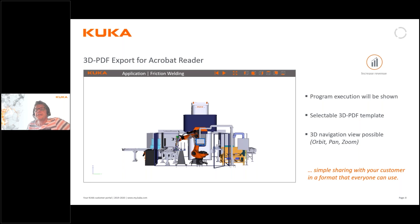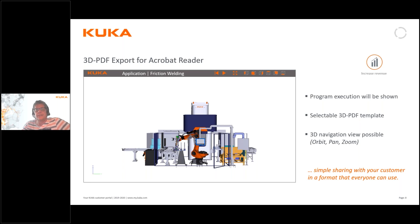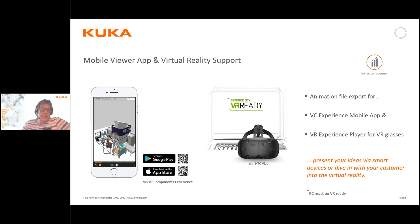I have uploaded under handouts an example of a 3D PDF export which you can download. You'll find it under the GoToWebinar tab handouts — you need Acrobat Reader to view a 3D PDF, but it includes an animation and you can freely pan and zoom within the 3D, so you can send this to your customers and they don't need a 3D tool to view it. And of course KUKA.Sim is also virtual reality compliant, so together with a VR headset we can actually step into the model we have created — not only looking at it on screen but experiencing it first-hand.